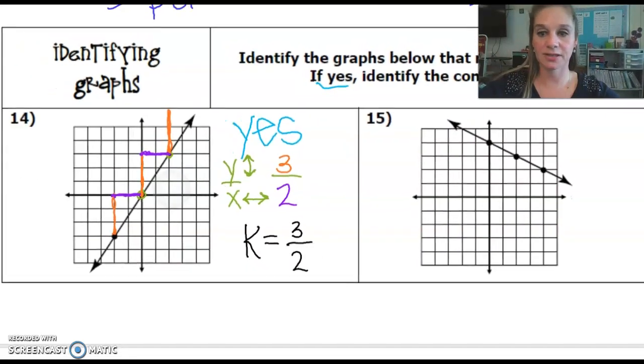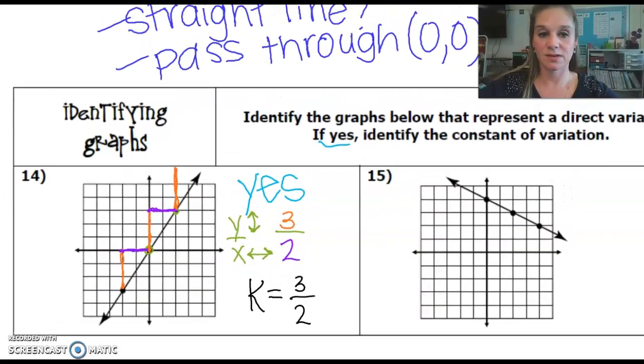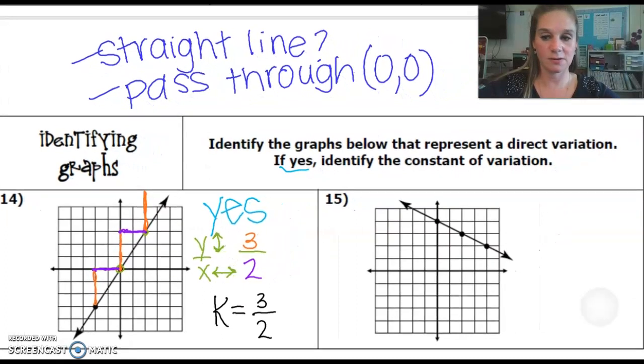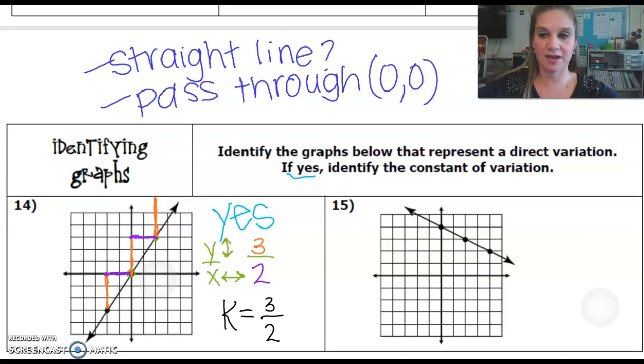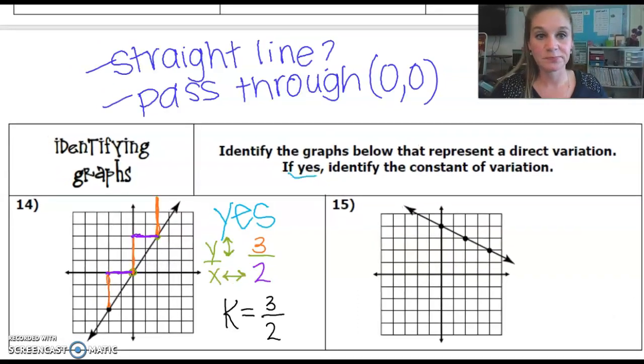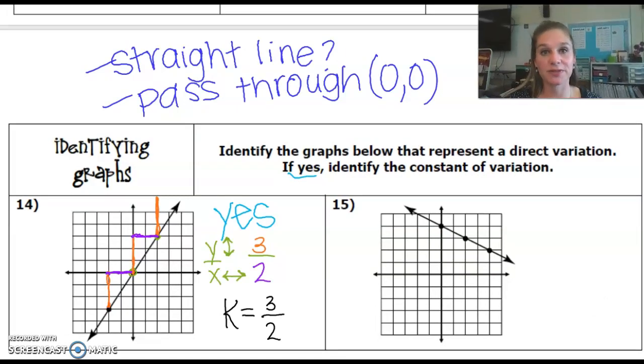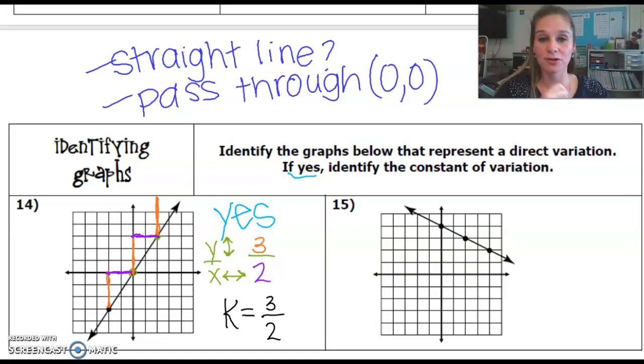All right, so let's zoom back and see if I can help you do number 15 before I have you try a couple on your own. On number 15 we're going to go back to where we started earlier. We said that in order to decide if it does represent direct variation, we would need to first ask does it create a straight line and does it pass through zero zero. It has to do both of those things in order to be considered direct variation.